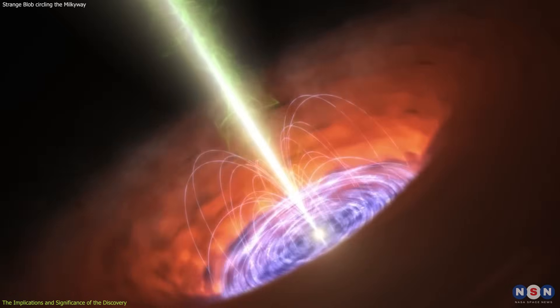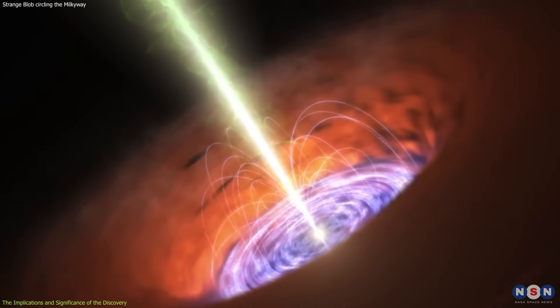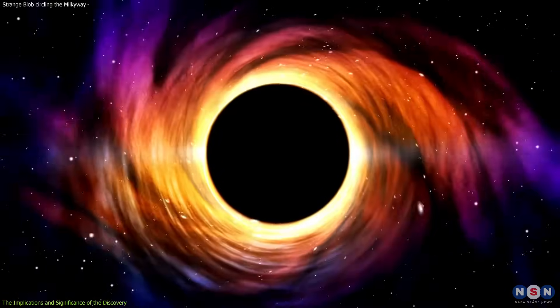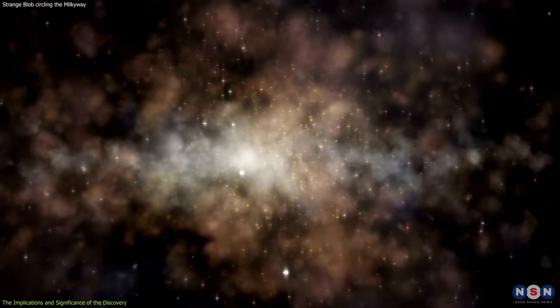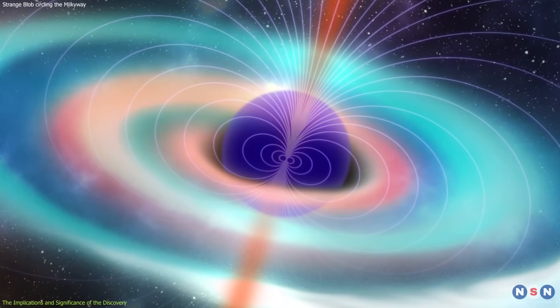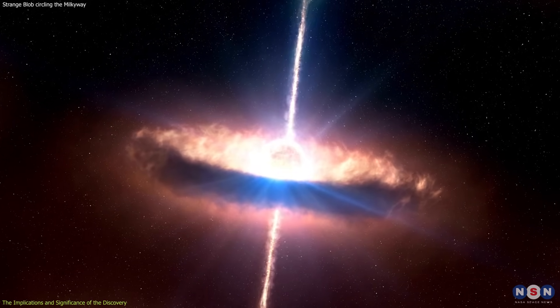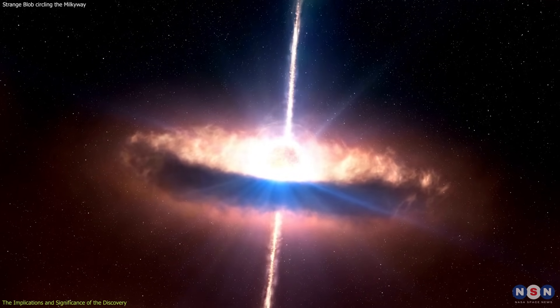Second, it reveals that the black hole has a complex and dynamic magnetic field that can affect the behavior and shape of the accretion disk and the blob of gas. This helps us to constrain the geometry and strength of the magnetic field, and to understand how it influences the formation and evolution of the blob and the accretion disk.